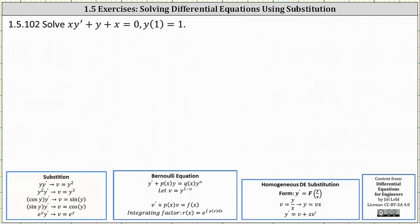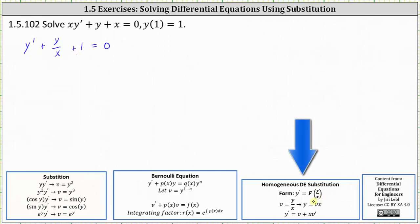To help us identify the substitution, let's begin by dividing through by x, which gives us y prime plus y divided by x plus one equals zero. Ignoring the y prime for a moment, notice y divided by x plus one is a function of y divided by x, and therefore we have a homogeneous differential equation where we let v equal y divided by x, and y prime is equal to v plus x v prime.